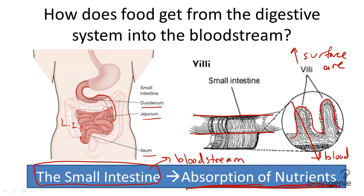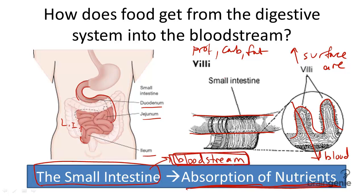Nutrients like proteins, carbohydrates, and fats can enter the bloodstream this way and get to cells where they are needed the most. So remember, the function of the small intestine is not only to break down food into smaller pieces, but it is also to get those key nutrients into the bloodstream and ultimately to the cells where they are needed the most.